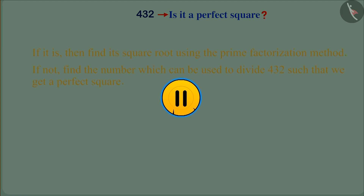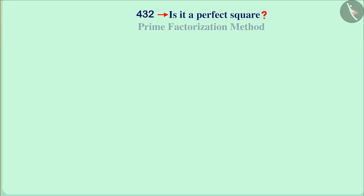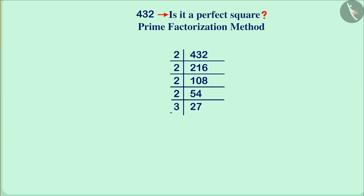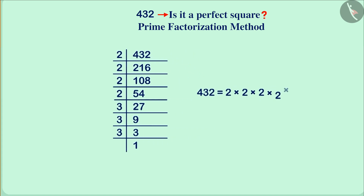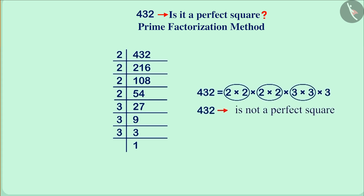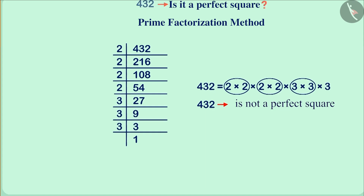You can pause the video here and factorize this number. We know that if a number is a perfect square, it is equal to the square of its square root. Now, let us depict the number 432 as a product of its prime factors. We can see that not all prime factors of this number are in pairs here. That is, it is not a perfect square.